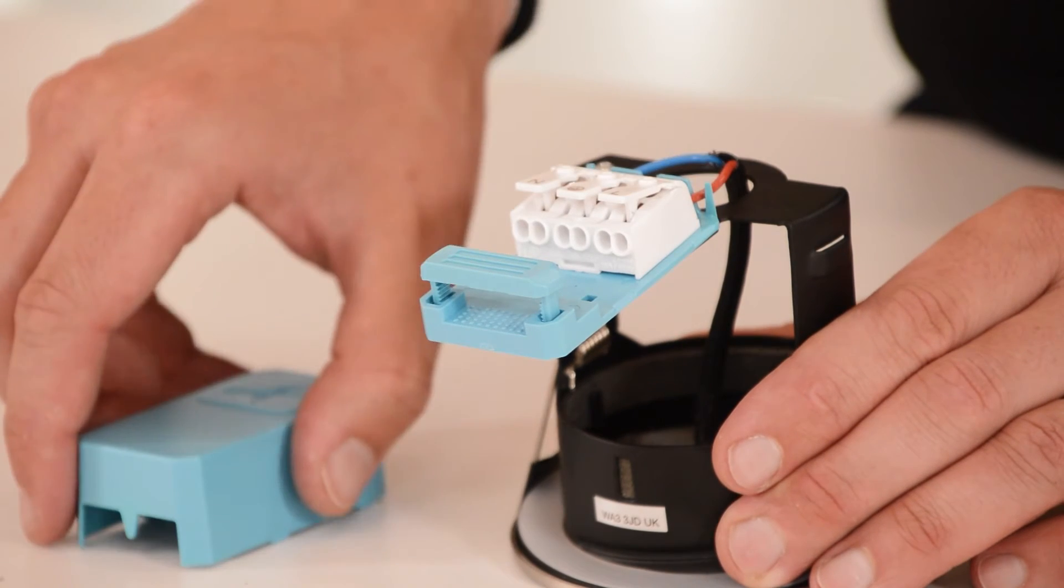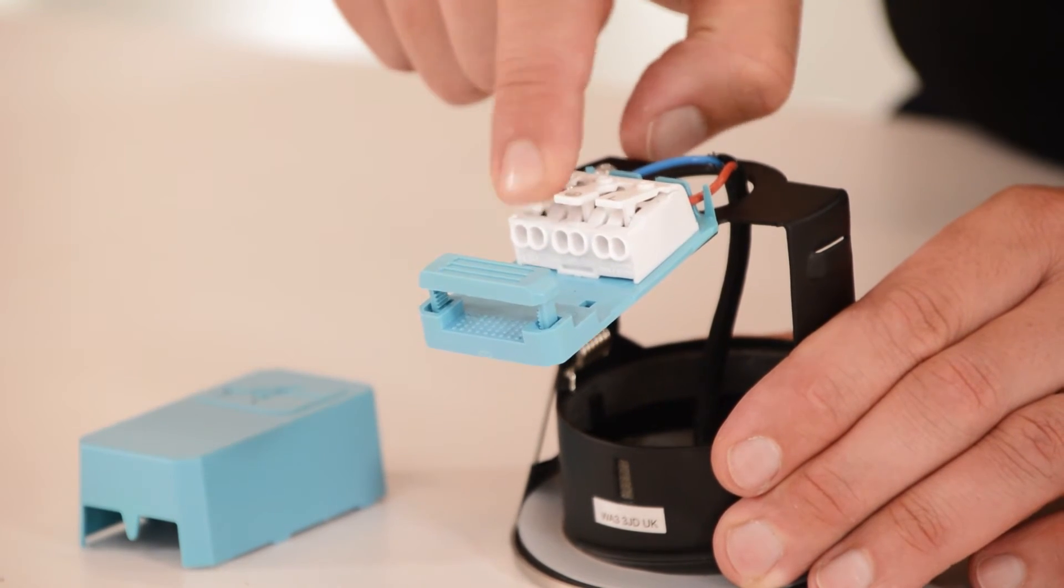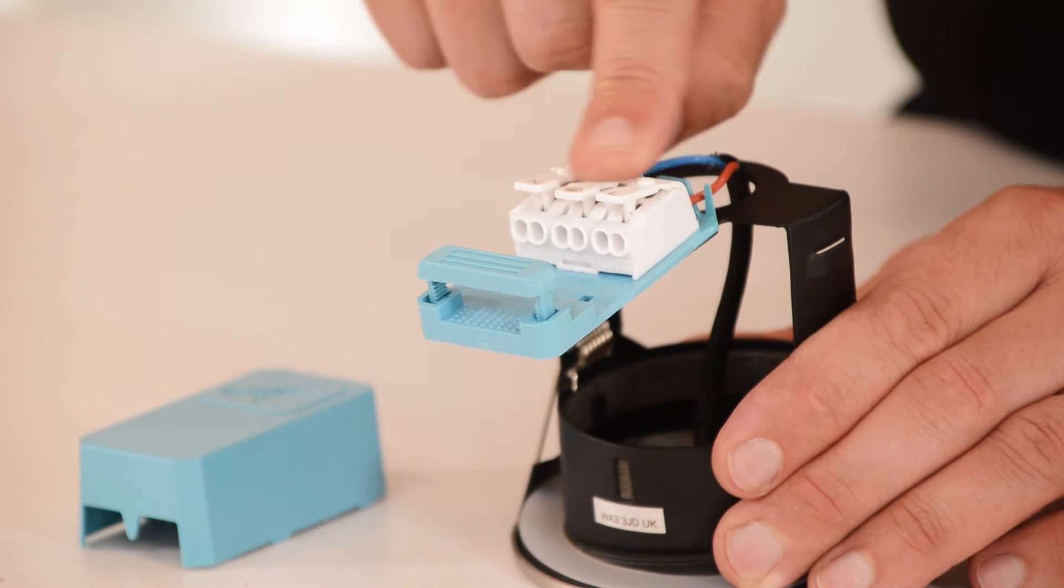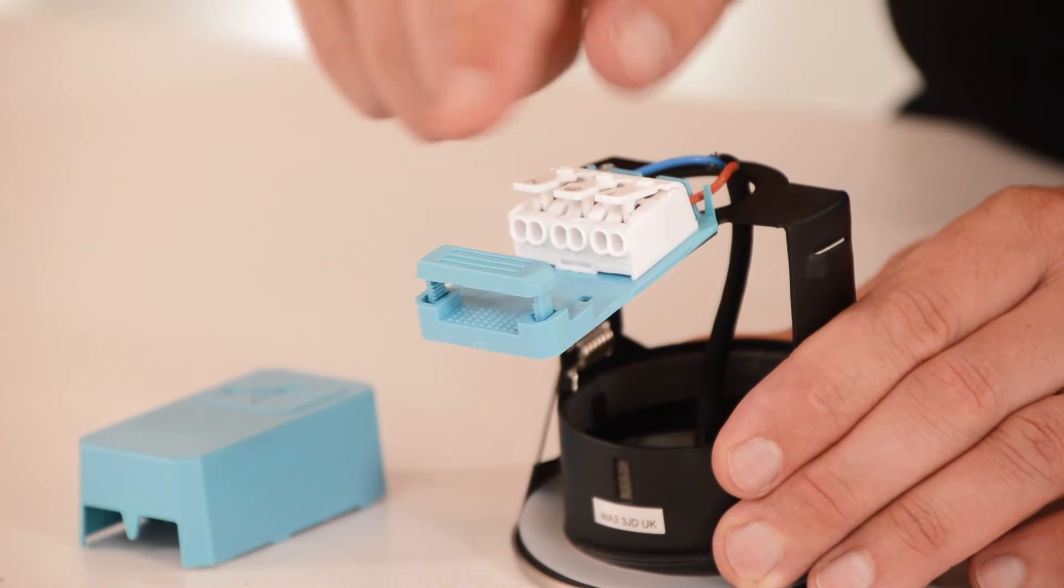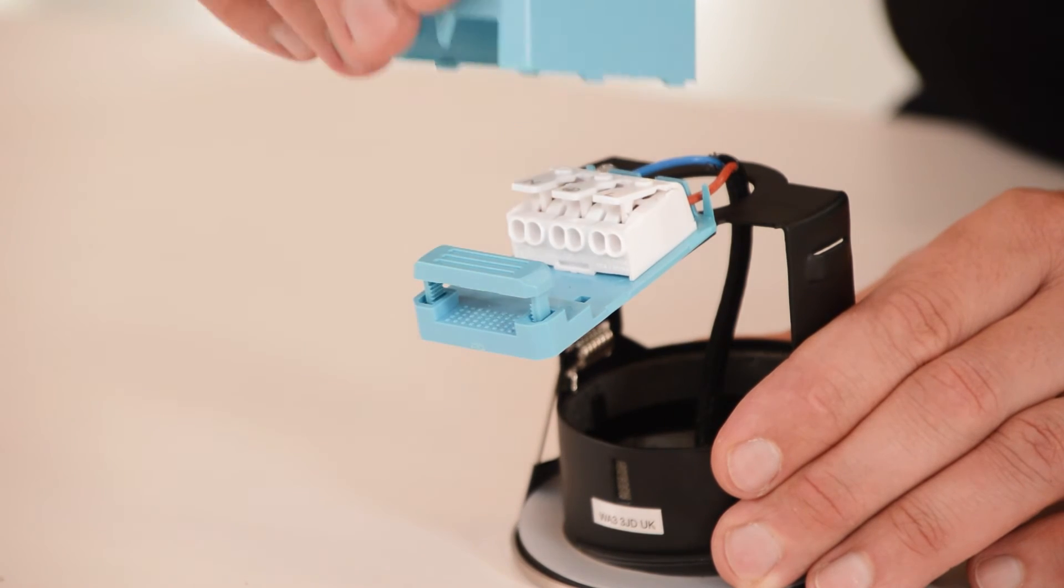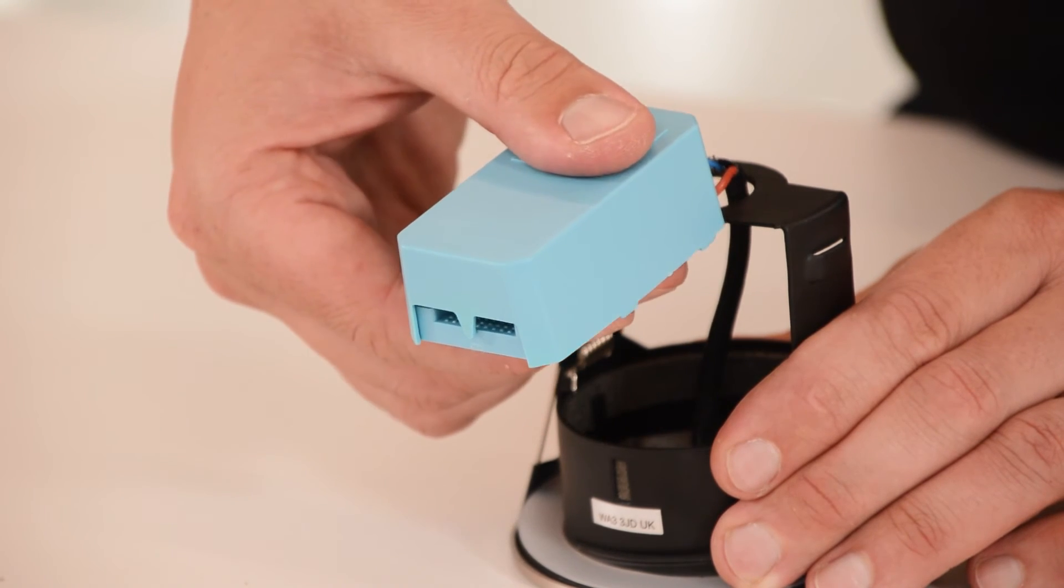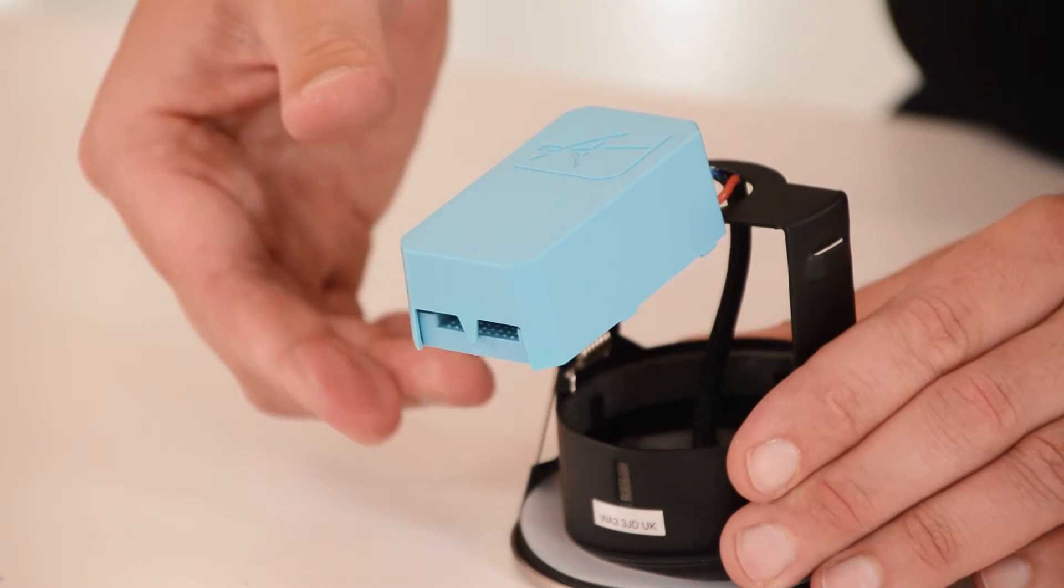When installing the Edge, it has push-fit terminals for fast loop-in, loop-out. These terminals comfortably allow two 1.5mm twin and earth cables, secured via the screwless snap-fit cover and cable clamp, aiding the quick installation.